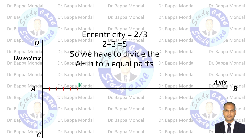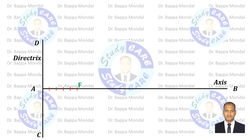As given, eccentricity is 2 by 3. So divide AF into 5 equal parts — that is numerator plus denominator. Each part will be 10 millimeters. Then take point V, the vertex, which will be 20 millimeters distance from focus and 30 millimeters from the directrix.